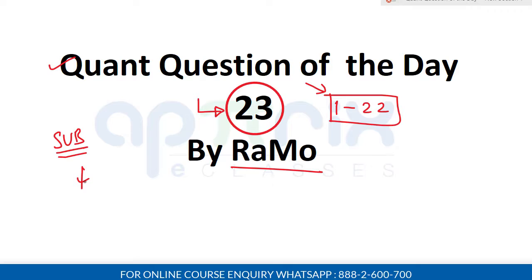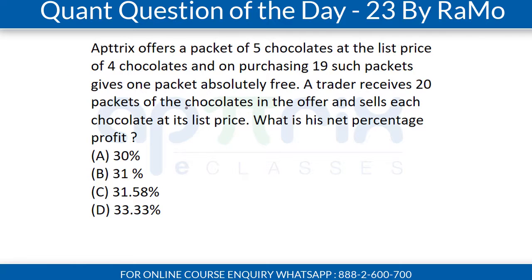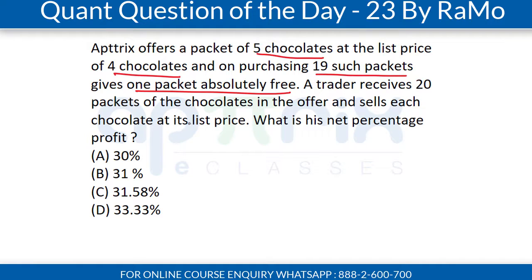So let's move further and read the question. Eptrix offers a packet of 5 chocolates at the list price of 4 chocolates, and on purchasing 19 such packets, gives 1 packet absolutely free. A trader receives 20 packets of chocolates in the offer and sells each chocolate at its list price. What is his net percentage profit?